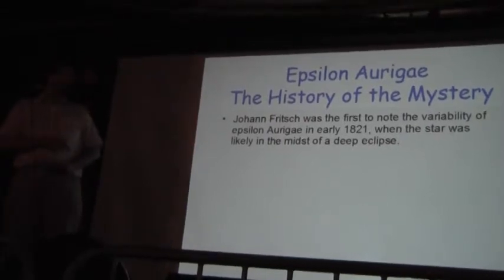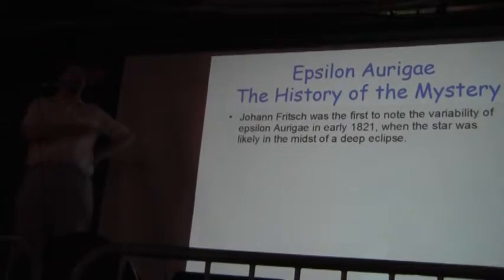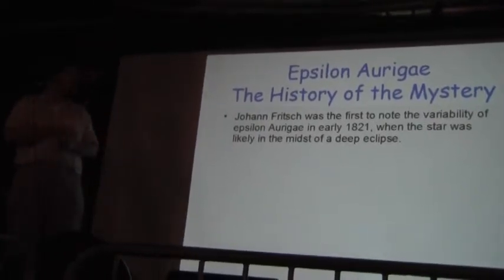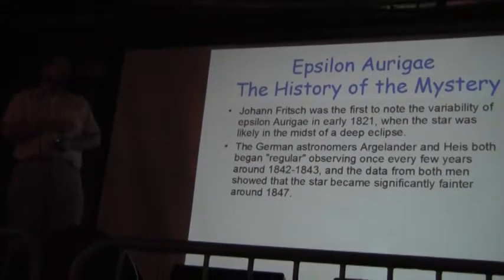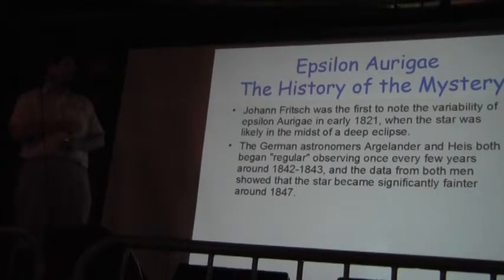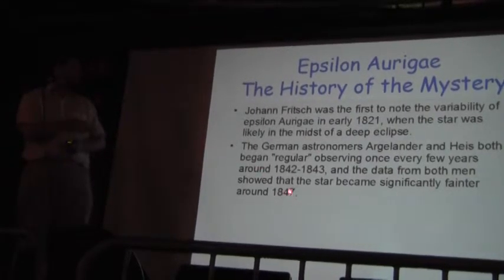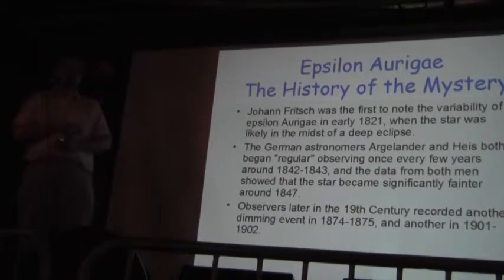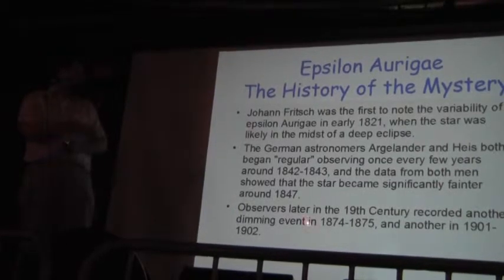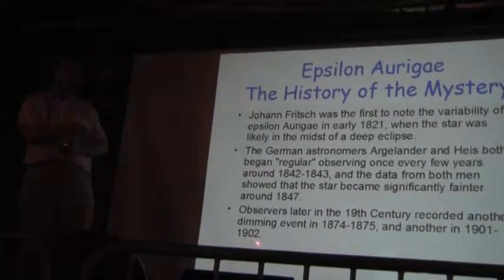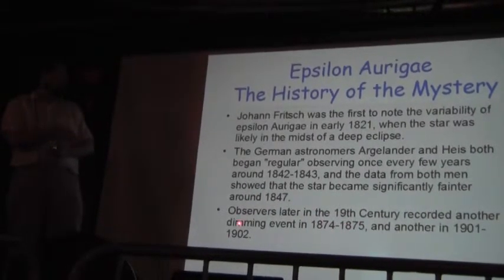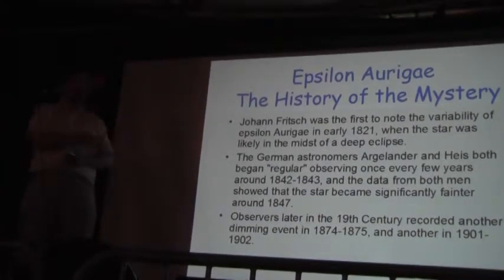How did this mystery come about and what is the mystery of this system? Well, in about 1821, Johann Fritsch first discovered that this star actually dims and brightens and that he classified it as likely a long-term variable star. A regular observation campaign was begun in 1842 to 1843. And they noticed that in 1847, for about two years, it became quite a bit dimmer. Observations went on into the late 19th century. And there were dimmings again in 1874-1875, and 1901-1902. So, you can see a pattern developing here, dimming in 1847, dimming in 1874, dimming in 1901-1902. There's a regular pattern here, in the dates.